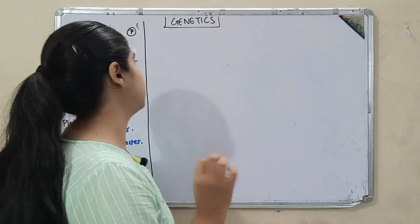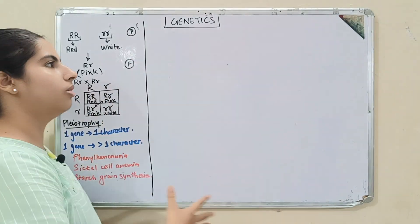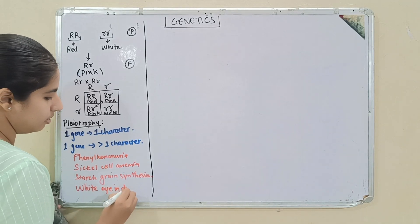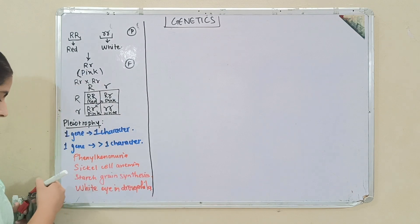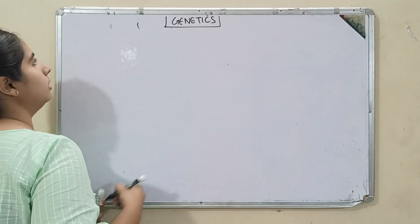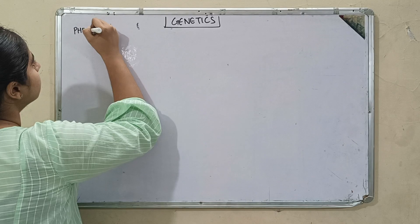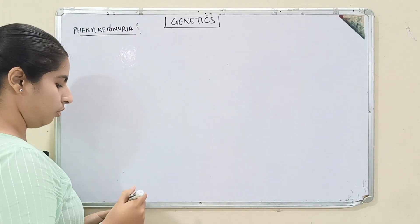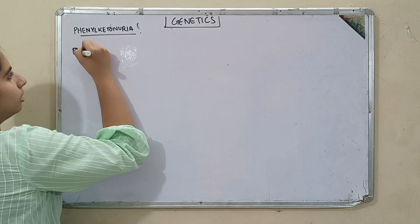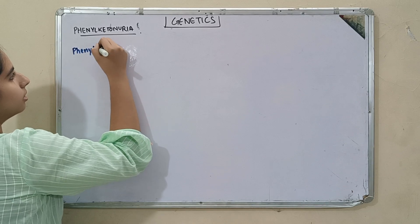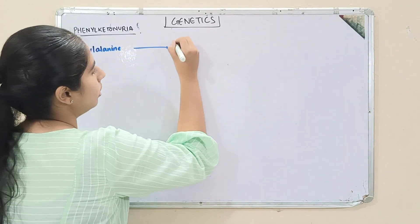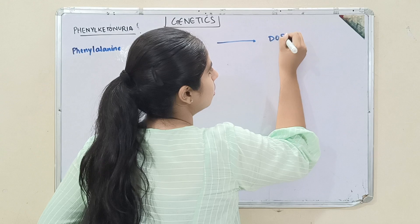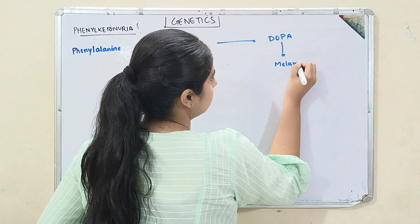Next we will start with phenylketonuria. I will show you the whole flow chart. Phenylalanine will convert into tyrosine, tyrosine will convert into dopa, and dopa will form melanin.